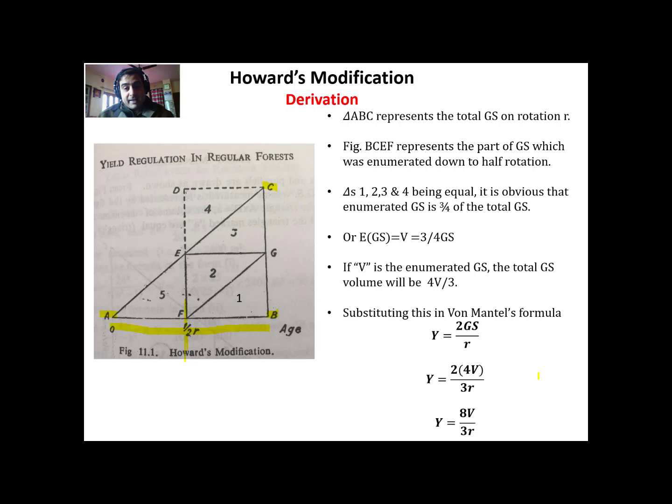Note that if age of the trees is not known, we can reduce our enumeration to half of the diameter class available in that forest. That's all about Howard's modification. Thank you.